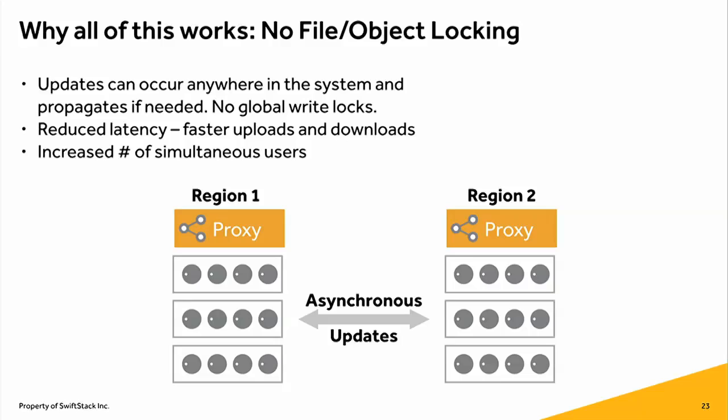Why all this works sanely is because there's no file or object locking happening in the system. Uploads can occur and other people can be uploading the same objects at the same time. Conflict resolution is very simple — it's done through timestamps, newest file wins. There's no logic to distribute global file locks, which makes it faster to access objects and increases the number of requests the cluster can handle at any given time, since there's nothing shared between nodes to lock anything up.